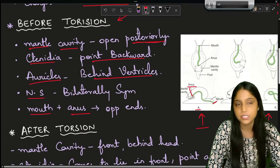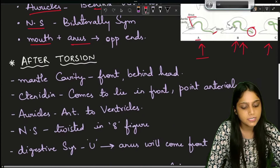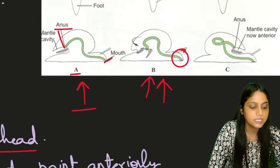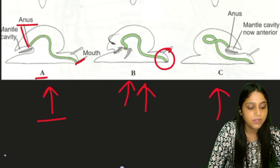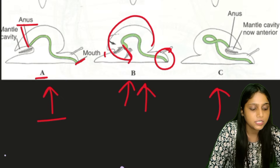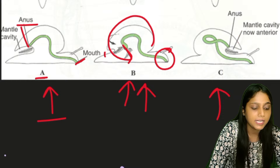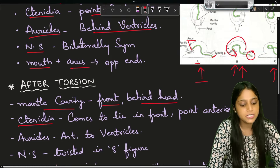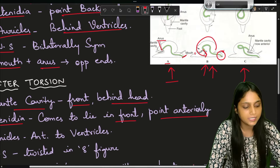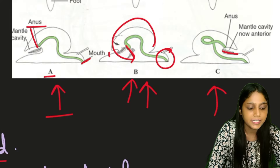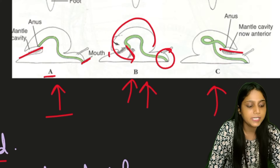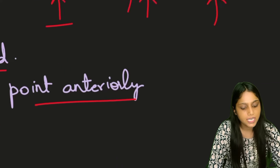Now after torsion - observing image C - after 180 degrees rotation, the mantle cavity has come to the front just behind the head, so the mantle cavity is now present at the anterior end. The ctenidia now come to lie in the front and point anteriorly. Comparing image A and image C: in image A ctenidia point backward, but after torsion they point forward.